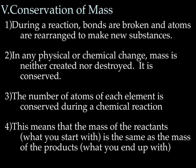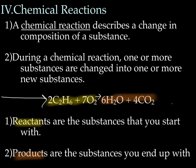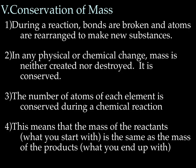Let's talk about the conservation of mass and matter. During a reaction, chemical bonds are broken and atoms are rearranged to make new substances. Going back to the equation, we have all the same atoms — Cs, Hs, and Os on both sides — so we use the same atoms, but those atoms are rearranged into something new. In any physical or chemical change, mass is neither created nor destroyed — it's conserved. The number of atoms of each element is conserved during a chemical reaction, meaning the mass of the reactants is the same as the mass of the products.